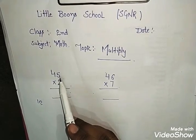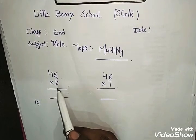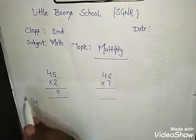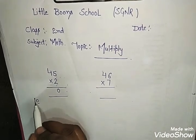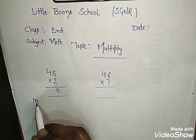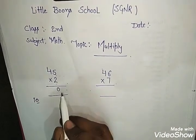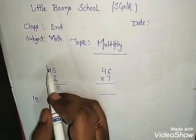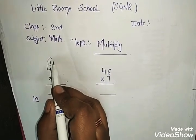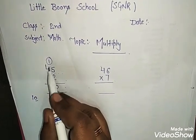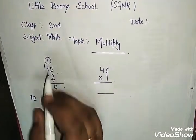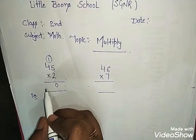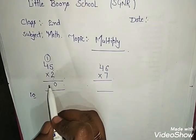45 multiply 2. 2 times 5 is 10. So right here, 0 is written and 1 is carry. 2 times 4 is 8. 8 and 1 add is 9.